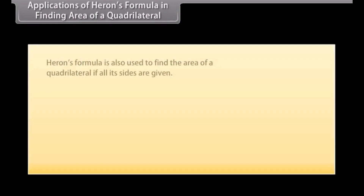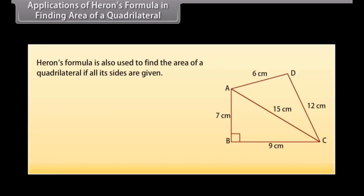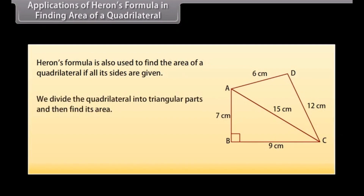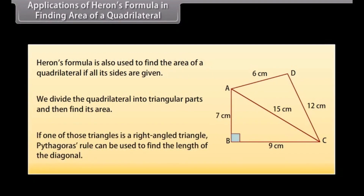Heron's formula is also used to find the area of a quadrilateral if all its sides are given. For that we divide the quadrilateral into triangular parts and then find its area. If one of those triangles is a right-angled triangle, Pythagoras' rule can be used to find the length of the diagonal.